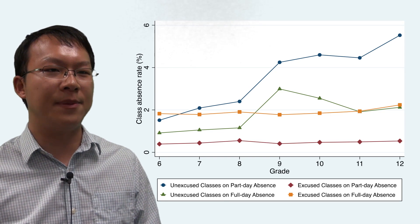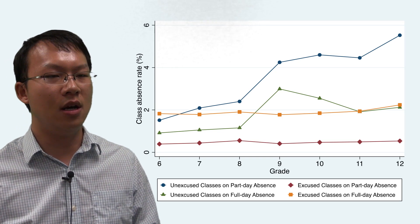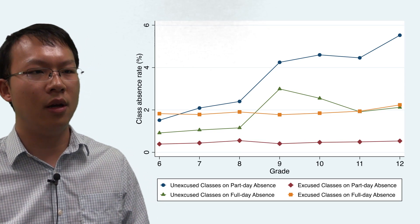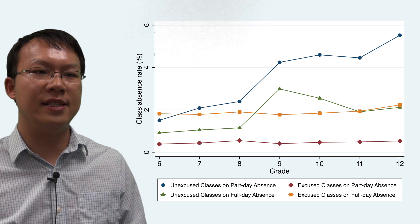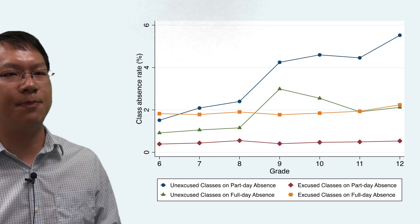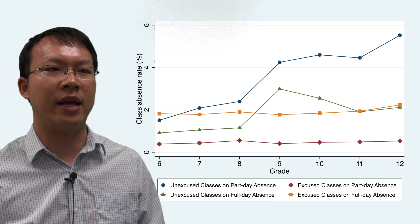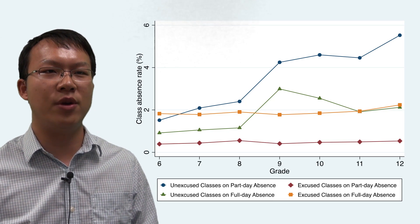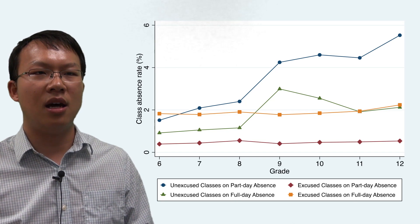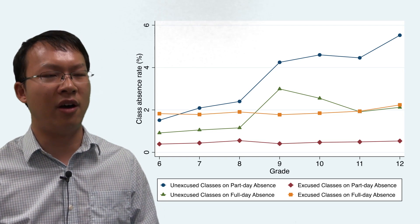Looking at chronic absence rate by racial group and considering both full-day and part-day absences, chronic absence rates increase by grade across all racial and ethnic groups, reaching 47.7% in 12th grade overall. Black and Hispanic students have a much higher share of chronically absent students than other groups and experience a more dramatic increase when entering high school. In 12th grade, about 70% of Black students are chronically absent, compared to only 23% of Asian students.